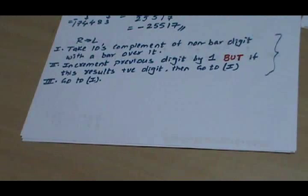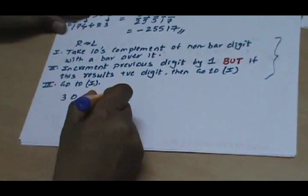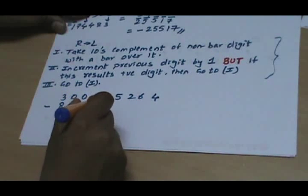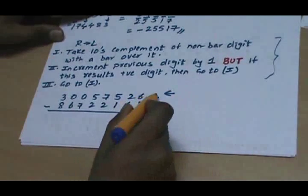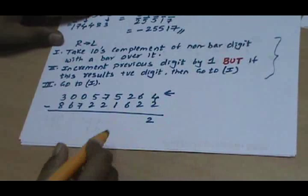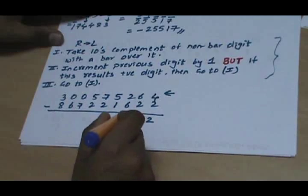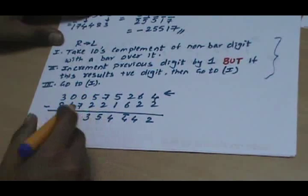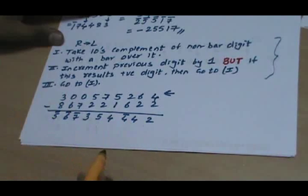Now let's say we want to subtract numbers: 3 0 0 5 7 5 2 6 4 minus 8 6 6 7 2 2 1 6 2 2. We follow the same approach right to left, bigger minus smaller. So we write: 2; bigger minus smaller gives 4; smaller minus bigger so we do bigger minus smaller with a bar over it giving 4̄; 5 minus 1 is 4; 7 minus 2 is 5; 5 minus 2 is 3; 0 minus 7 gives 7̄; 0 minus 6 gives 6̄.